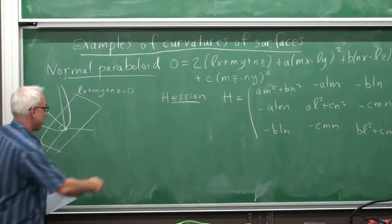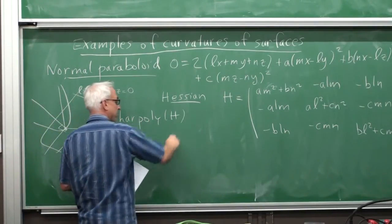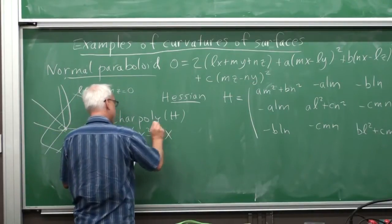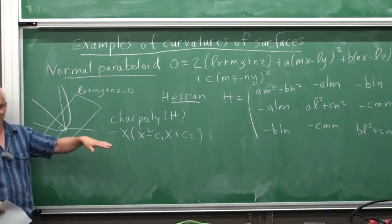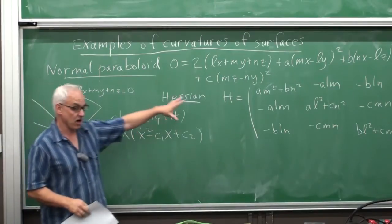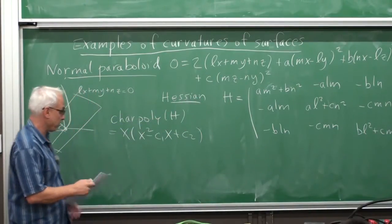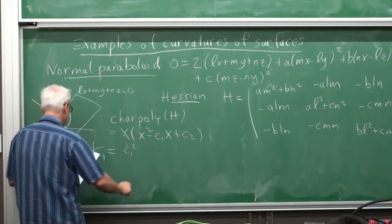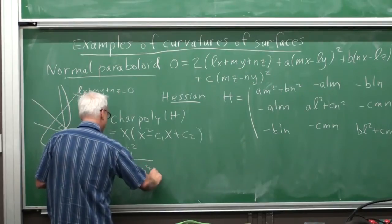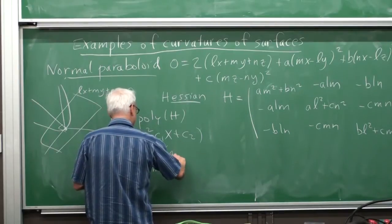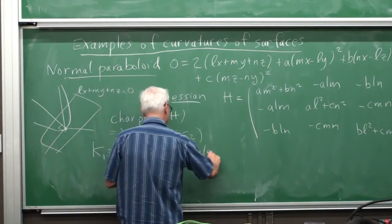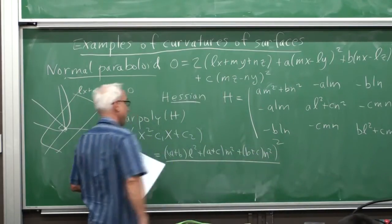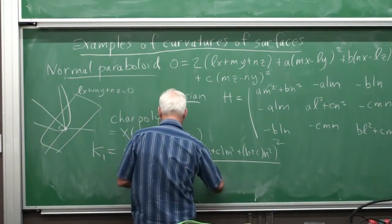The characteristic polynomial of this Hessian has a pleasant form: x times (x² − c₁x + c₂), where c₁ and c₂ are the same quantities appearing in the previous lecture's four-by-four matrix. The formulas for the curvatures — the first curvature K₁ — is c₁ squared divided by l² + m² + n², which equals (a+b)l² + (a+c)m² + (b+c)n², all squared, over l² + m² + n².